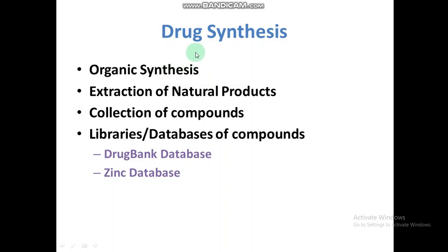Drug synthesis is the second step in medicinal chemistry. Here we actually need the drug to perform in the lab. It is either obtained by organic synthesis or extraction of natural products. During this extraction we purify our compound and that compound is used to study ligand interaction. We can collect a series of different compounds from different labs or different sources. Libraries are databases of compounds that are available on the internet.